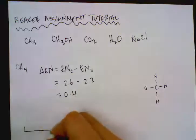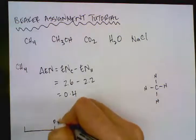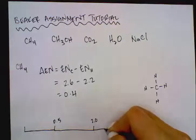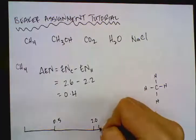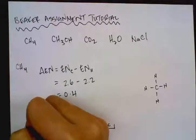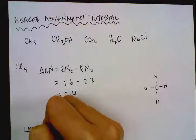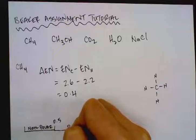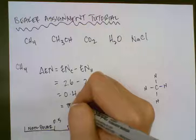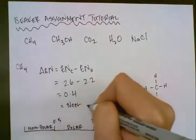We know that bonds, delta ENs, can be summarized essentially like this: if it's more than 2, it's ionic. If it's less than 0.5, it's nonpolar covalent. And if it's somewhere in the middle, it's polar. So in this case, because we're less than 0.5, we know that this is a nonpolar bond.